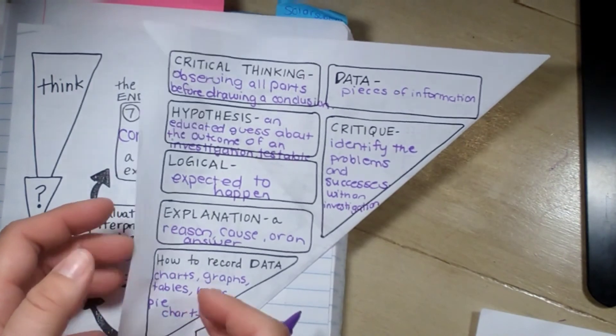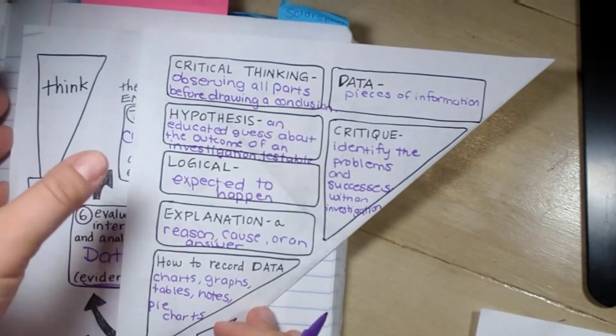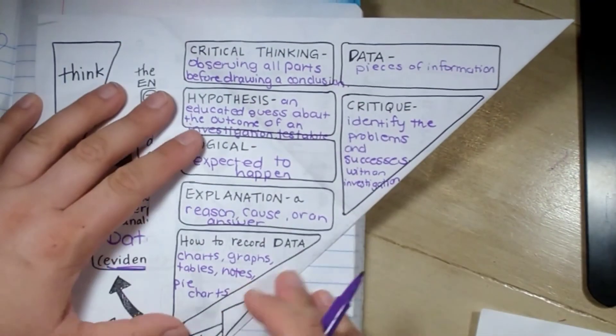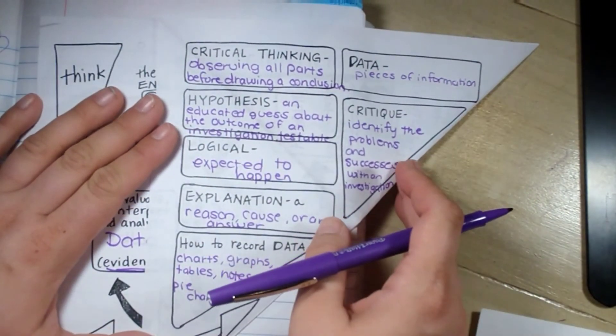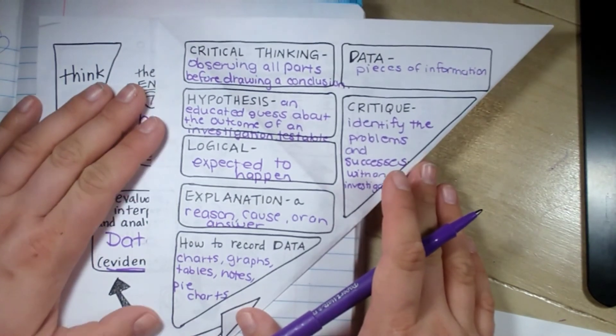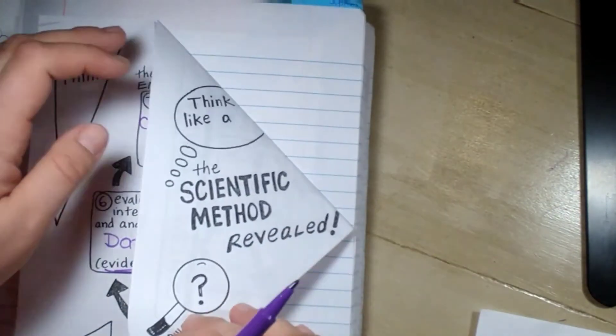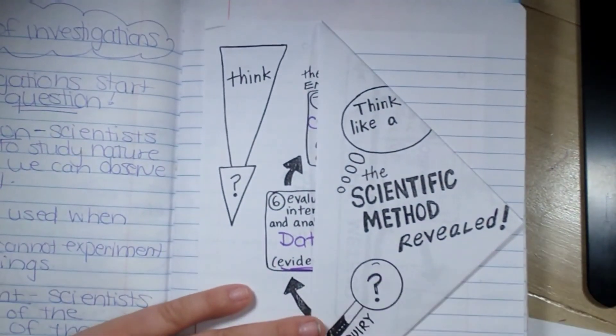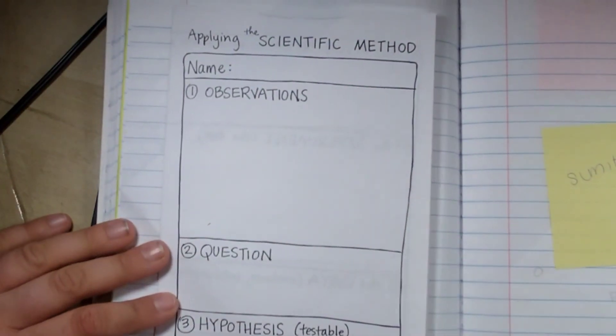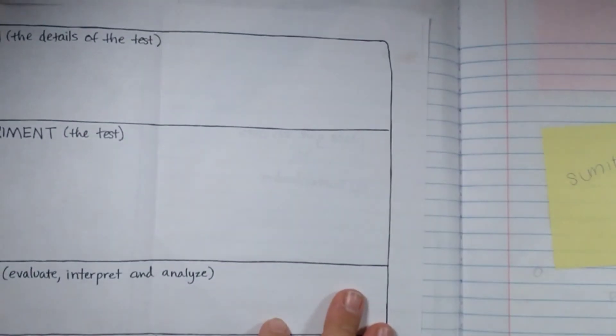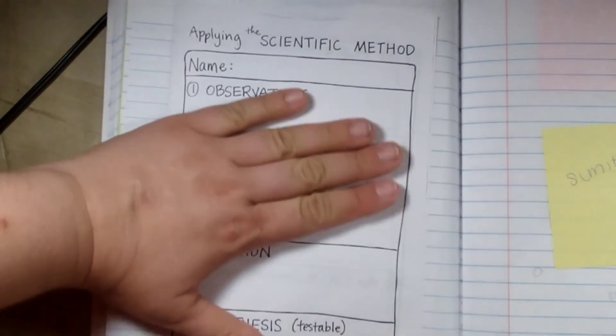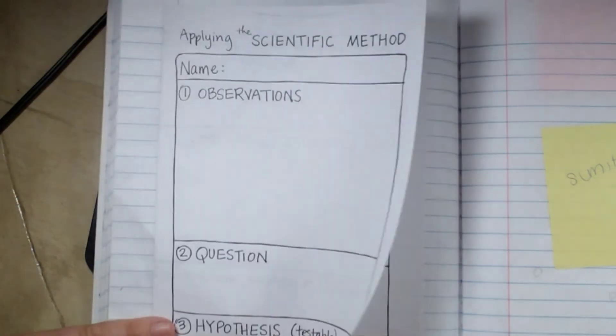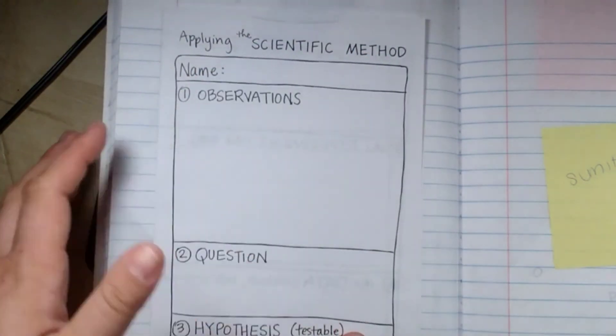That is our information on the scientific method. You're going to glue it where it says glue. So this part right here will be glued and you're going to fold it. So pause it right here and finish writing. And then you're going to fold it in there. We're going to think like a scientist. I also would like you to glue this in. We are going to be doing an experiment together as a group on a fun Friday.